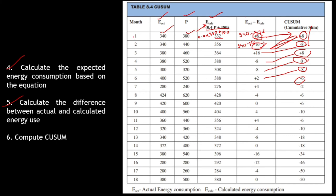This QSUM calculation is for the entire 18 months given in the question. Do not forget that — whereas when drawing the straight line and deriving the equation, we took only 9 months because the heat recovery system was installed at that point. So for the equation: 9 months. For this table: the entire 18 months.